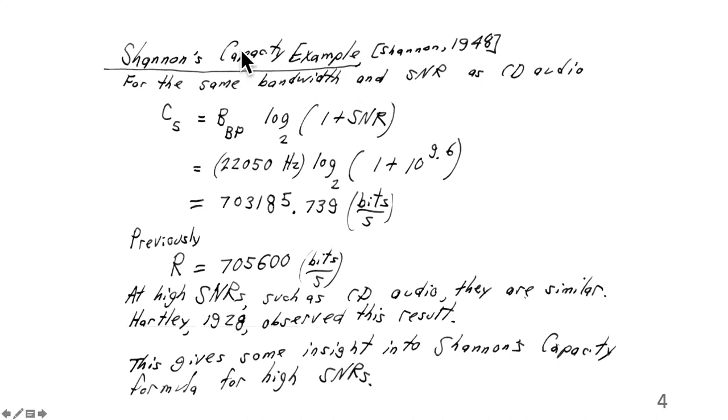Shannon's capacity, shown here with an example, Shannon published this work in 1948, that the maximum bit rate you can achieve in a channel with a given bandwidth signal-to-noise ratio is given by this expression. B is the bandpass bandwidth. SNR is the signal-to-noise ratio. This is log base 2. So you put in the bandwidth, the signal-to-noise ratio, and you get out the bit rate. That's the maximum bit rate you could get through a channel. Shannon derived this. He used random coding bounds. We can't derive that here. But I'm just giving some insight into Shannon's capacity formula, but for high signal-to-noise ratios.